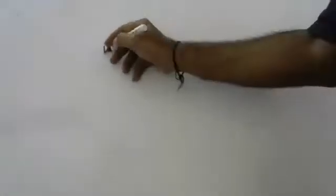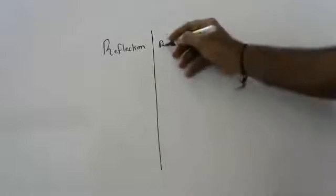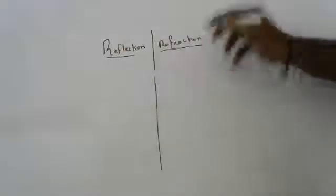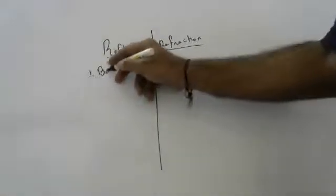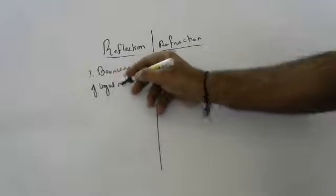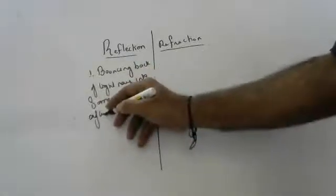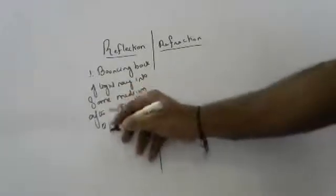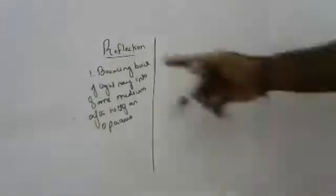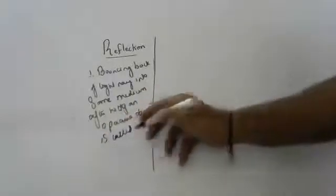Today we will discuss reflection. What is the difference between reflection and refraction? Reflection is the bouncing back of a light ray into the same medium after hitting an opaque object. When a light ray bounces back into the same medium after hitting an opaque object, we call it reflection.